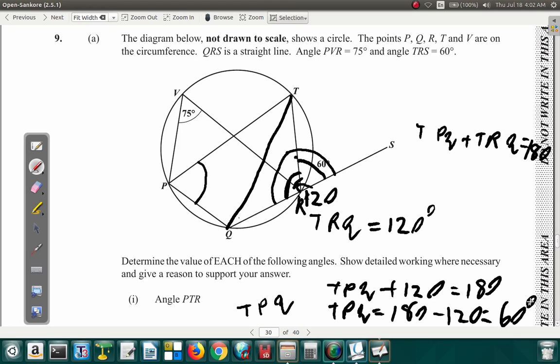So this angle here is 60. TPQ is equal to 60 degrees.